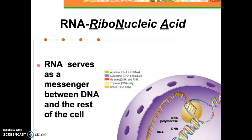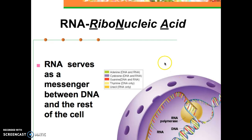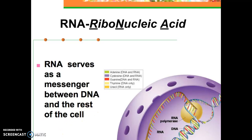RNA stands for ribonucleic acid. RNA is a messenger between DNA and the rest of the cell. In this nucleus, DNA has to stay there all the time — it can't leave. DNA is too large to fit through the nuclear pores. RNA is small enough to slip right through. So DNA gets transcribed into mRNA through a process called transcription. Once the single-stranded mRNA is made, it can slip out of the nuclear pores and travel to a ribosome to be made into a protein — that's called translation.